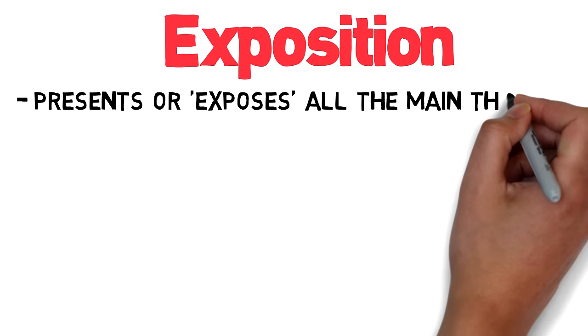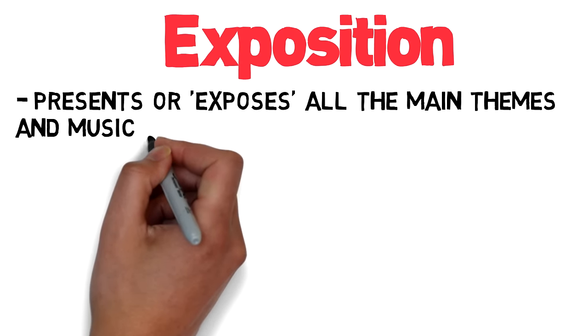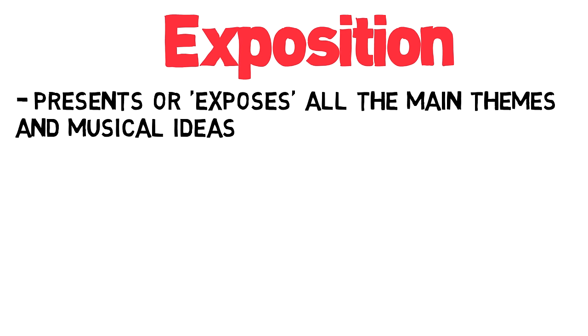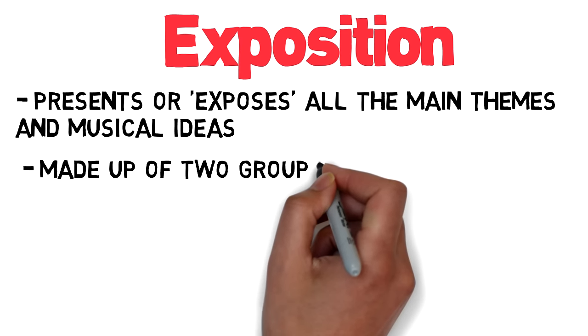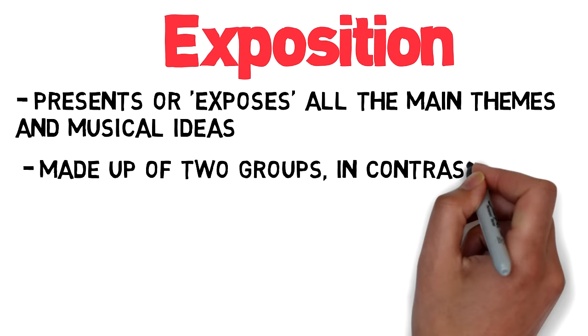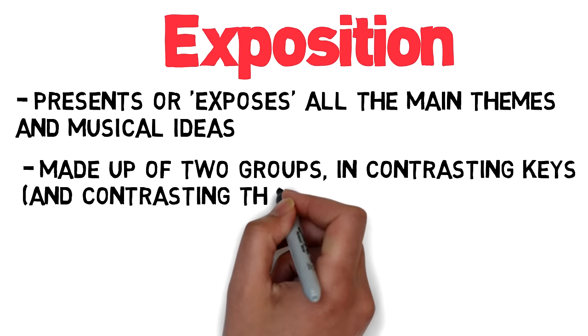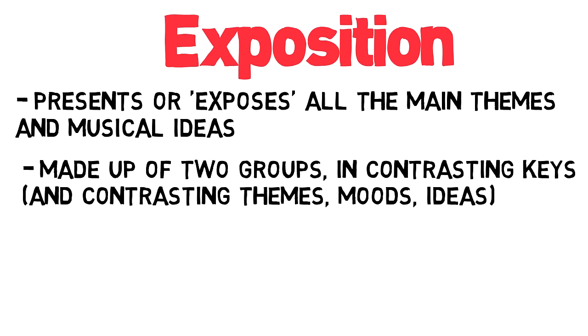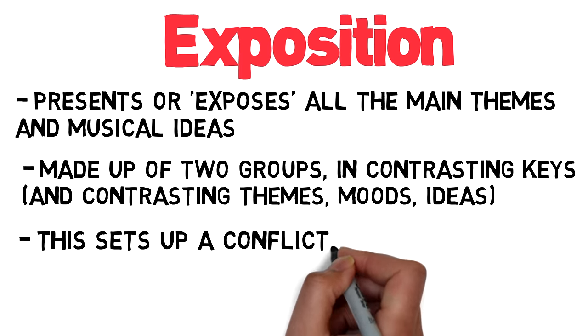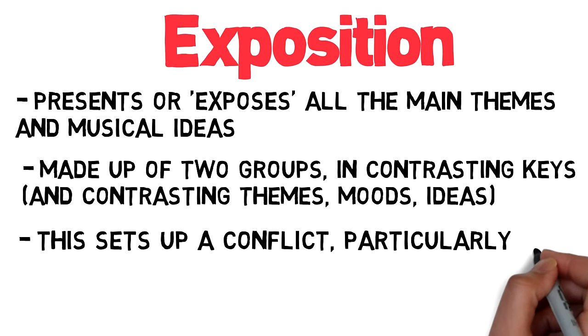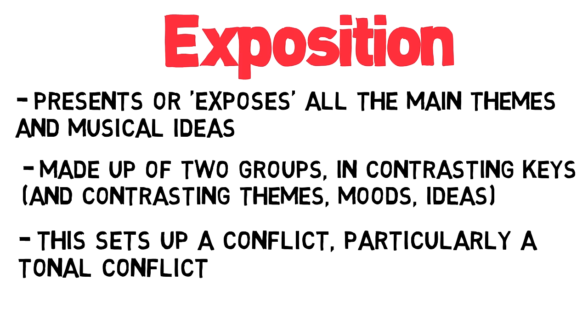Sonata form can be divided into three main parts. First, the exposition, which basically presents or exposes all the main themes — all the main musical material and seeds. This is made up of two groups, which will definitely be in contrasting keys, and may also have contrasting themes, moods, or ideas. So that already sets up a kind of conflict, and particularly a conflict of keys. The exposition is often repeated.